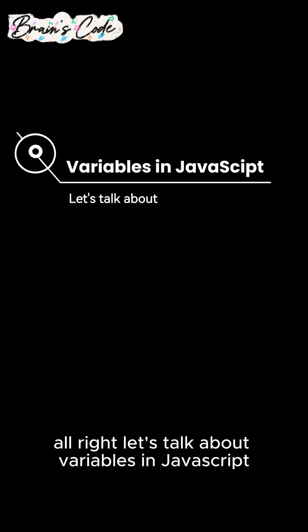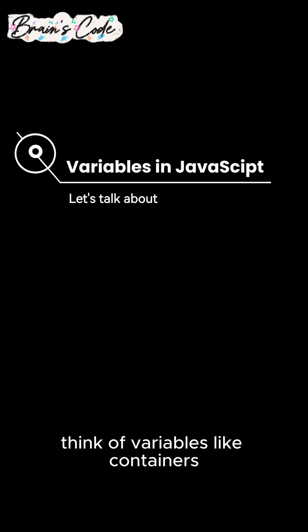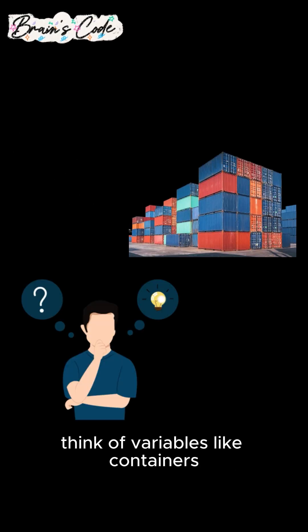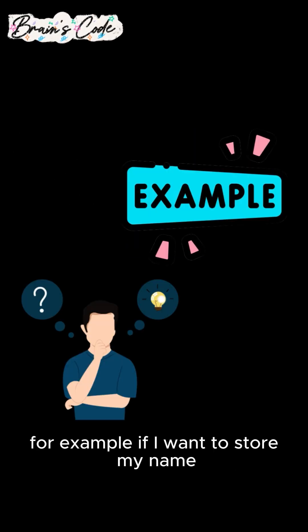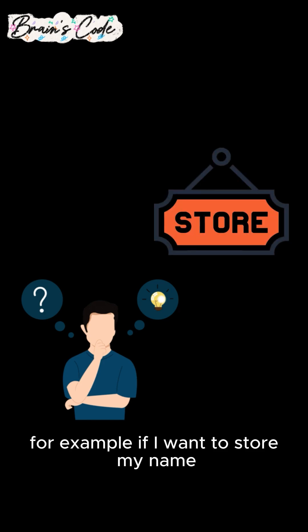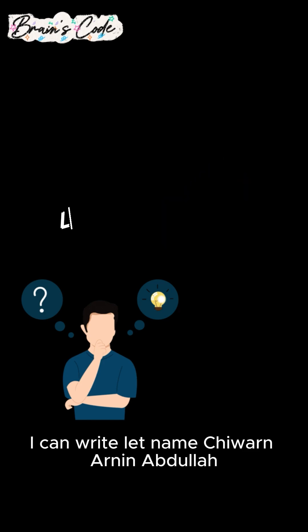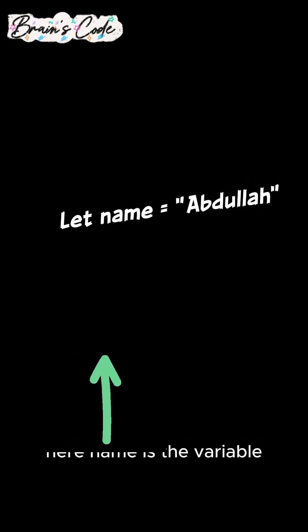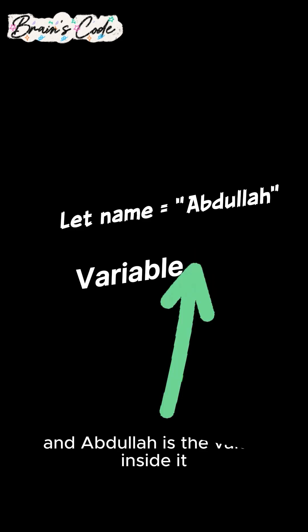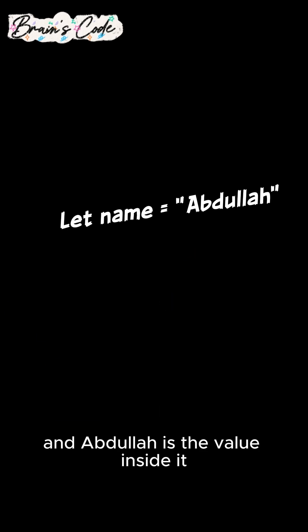Alright, let's talk about variables in JavaScript. Think of variables like containers where we store information. For example, if I want to store my name, I can write: let name = 'Abdullah'. Here, name is the variable and Abdullah is the value inside it.